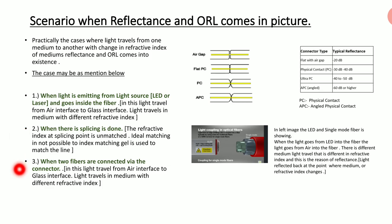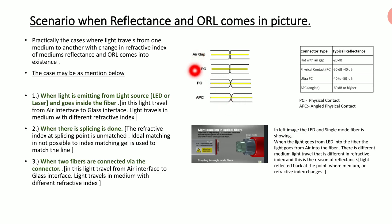When two fibers are connected via a connector, light travels from the air interface to the glass interface and back again — glass to air to glass. So reflectance comes into the picture. There are different types of connectors: air gap, flat, PC (physical contact), and APC (angle physical contact). Each has a typical reflectance value: APC gives minus 60 dB or better; Ultra PC gives minus 40 to minus 50 dB; PC gives minus 30 to minus 40 dB; and flat air gap gives minus 20 dB.